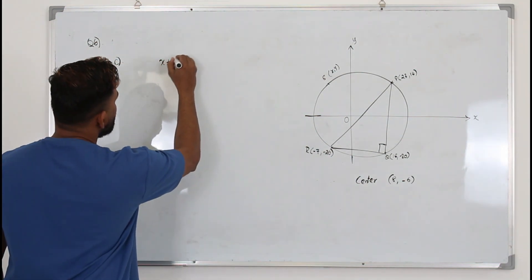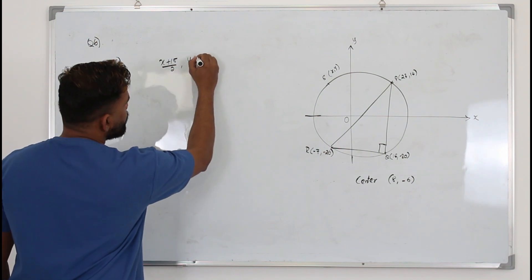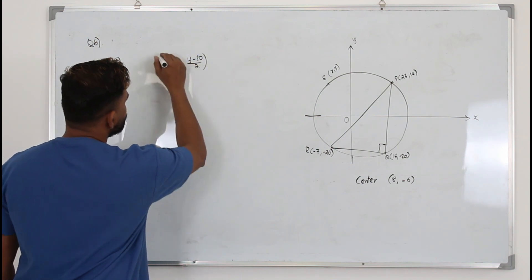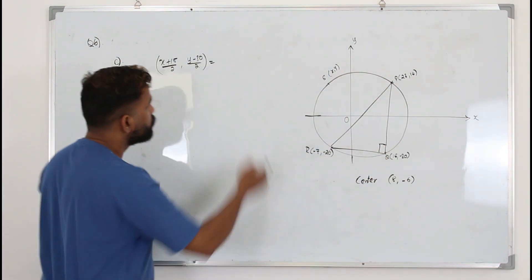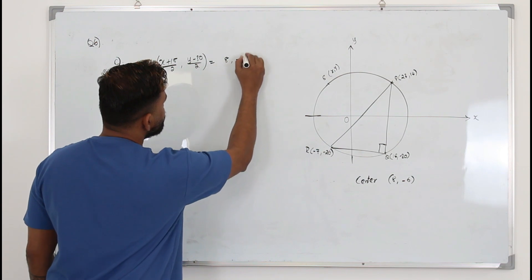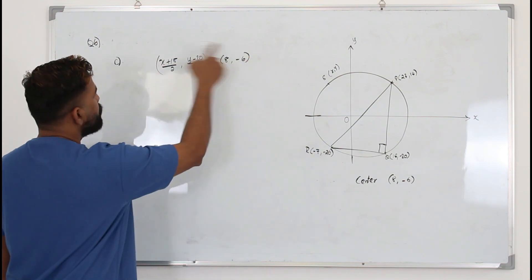X plus 15 over 2, Y minus 30 over 2. X1 plus X2 by 2, Y1 plus Y2 by 2, which is same as the center. So equate them separately.